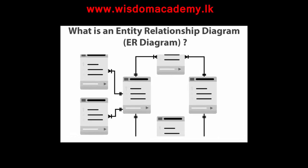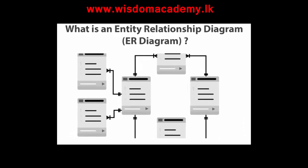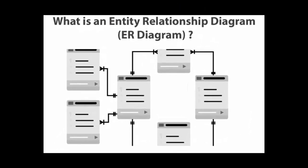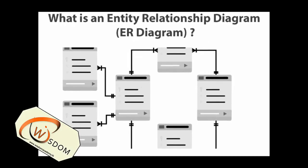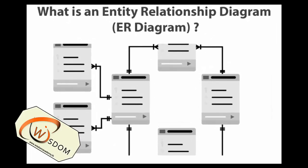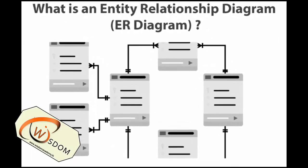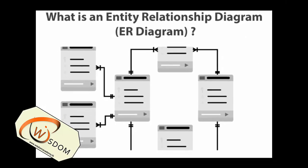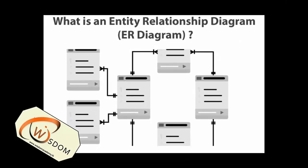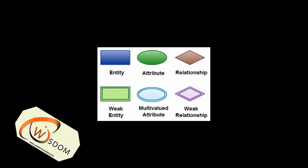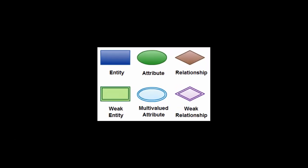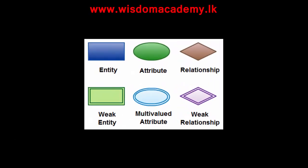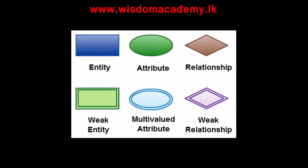An ER diagram shows the relationship among entity sets. An entity set is a group of similar entities and these entities can have attributes. In terms of DBMS, an entity is a table or attribute of a table in a database. So by showing relationships among tables and their attributes, an ER diagram shows the complete logical structure of a database.